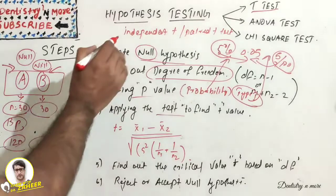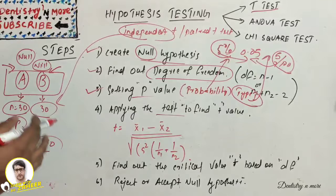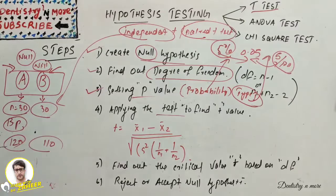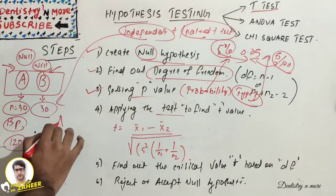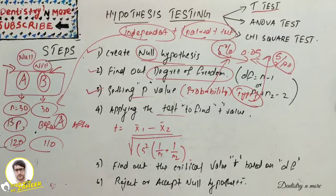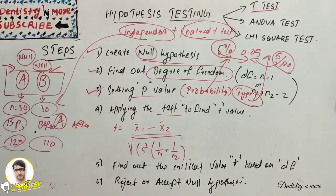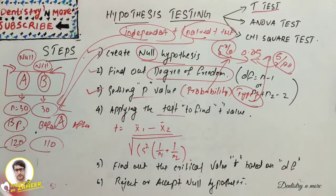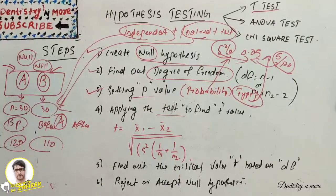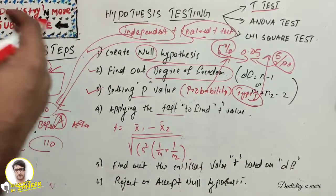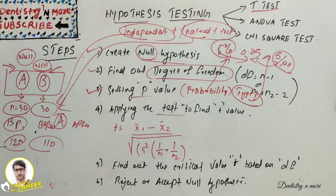In this case, we apply the independent t-test because both groups are different — we have group A and group B. The paired t-test is used when we have a before-after experiment — for example, applying a drug on group A and checking results after 30 days in a single group. If we have two different groups, A and B, we use the independent t-test. Depending on whether the groups are paired or unpaired, we choose accordingly.